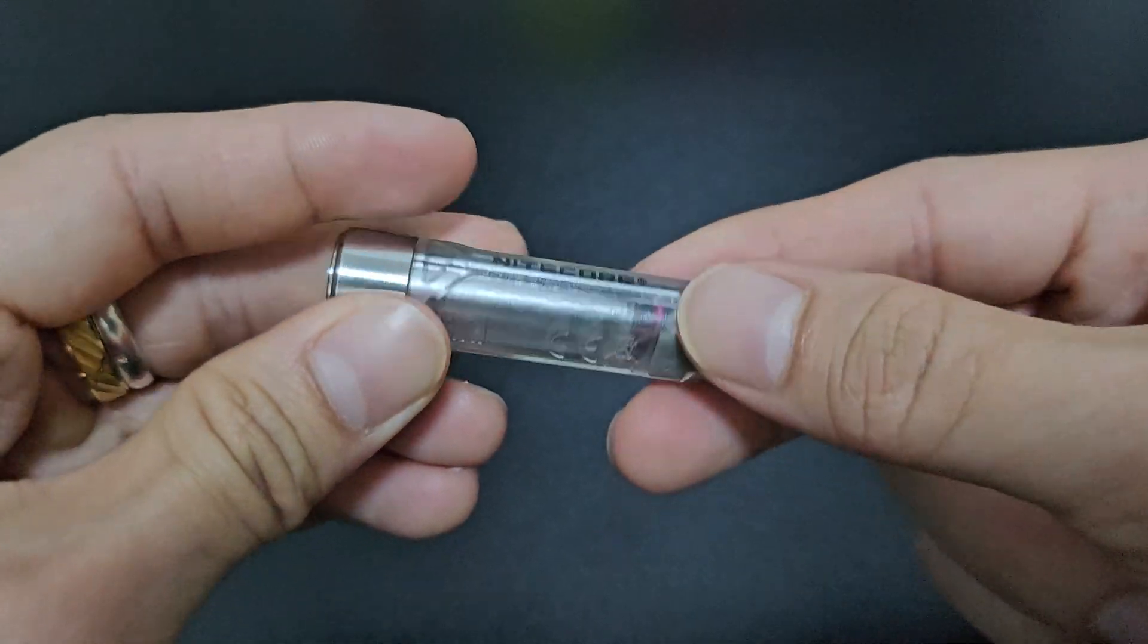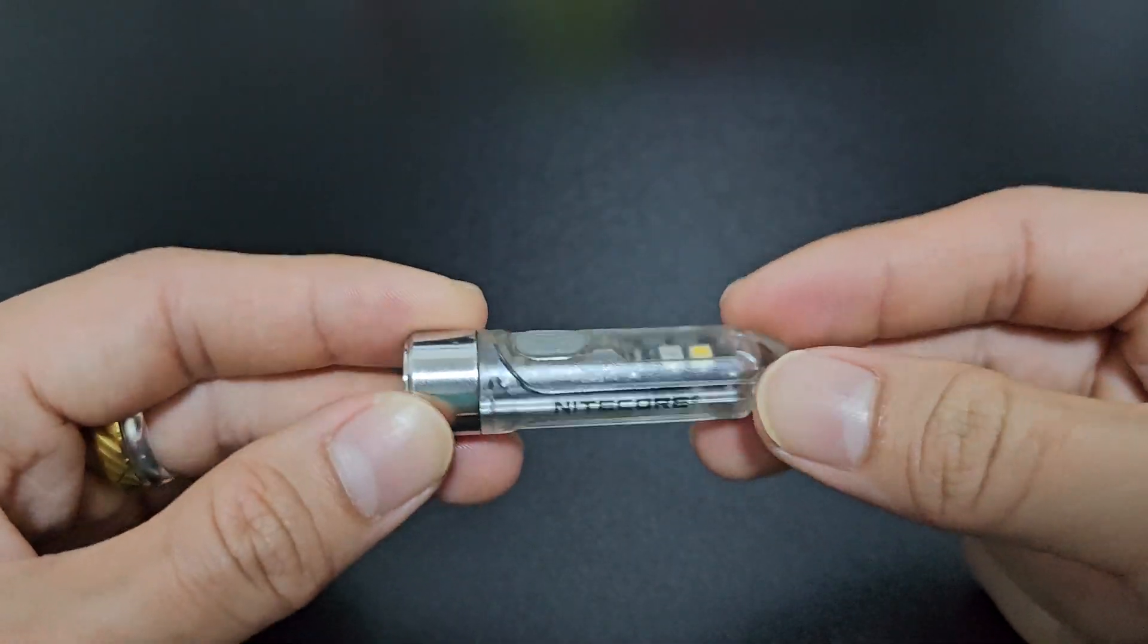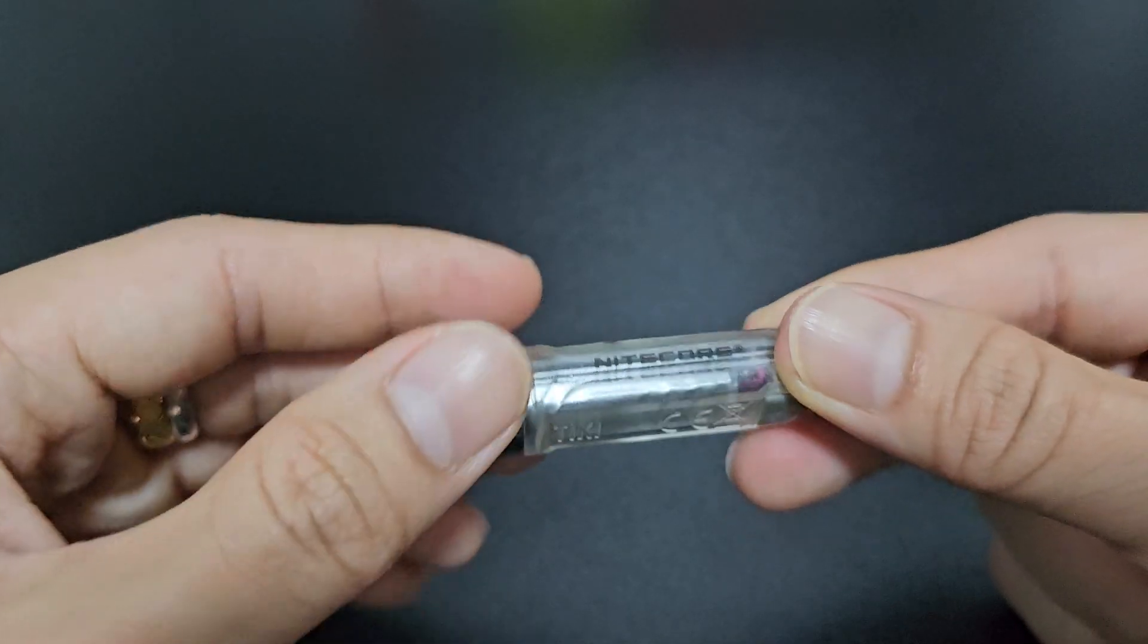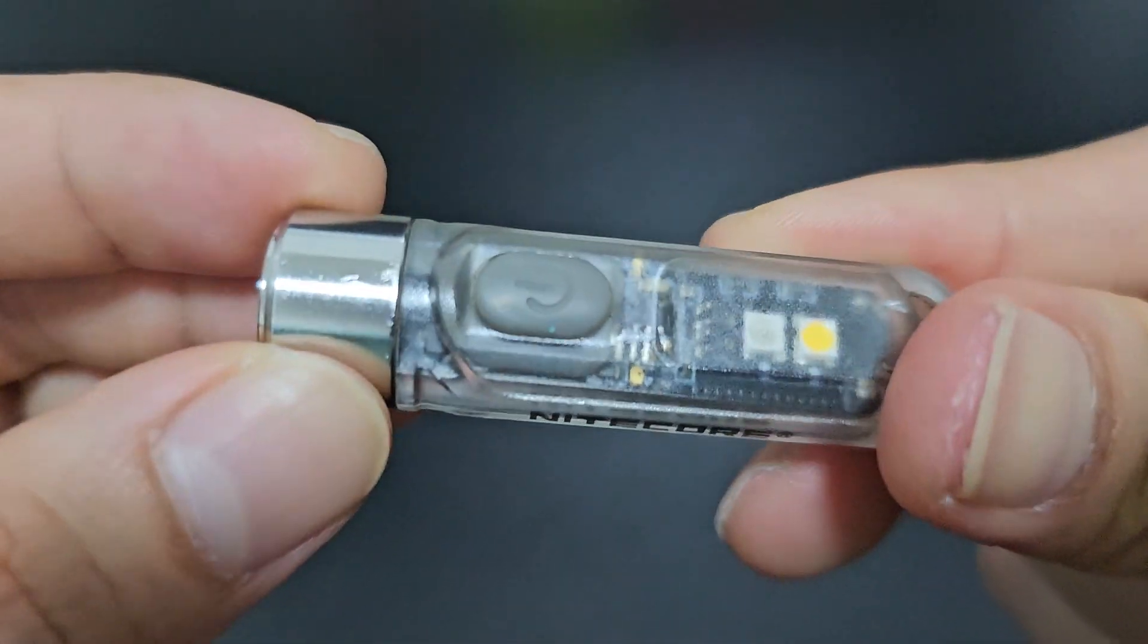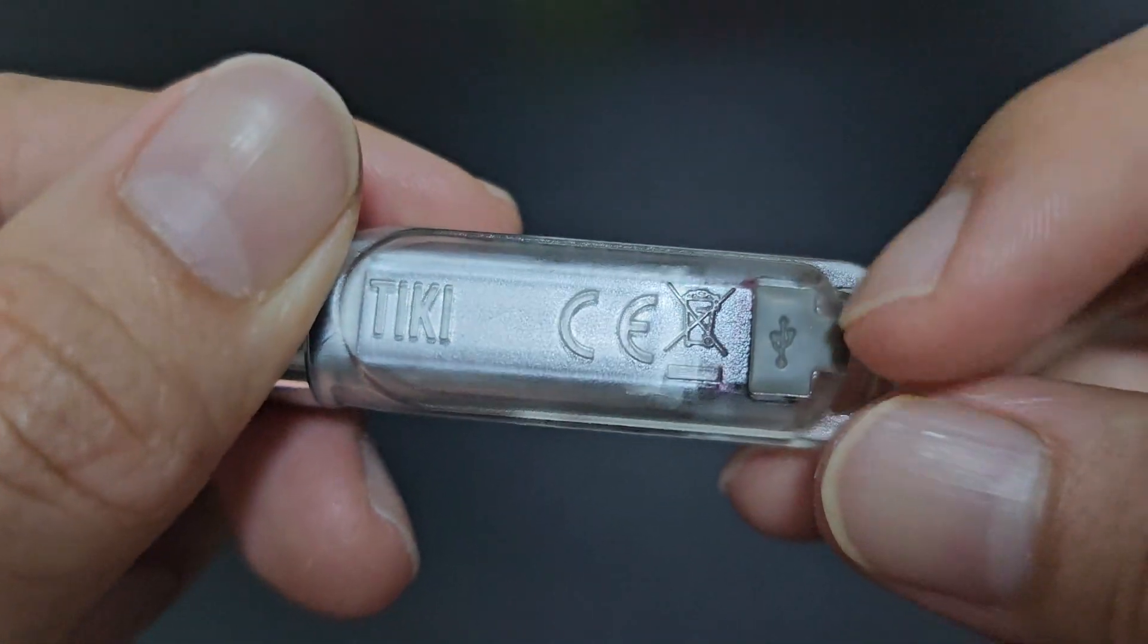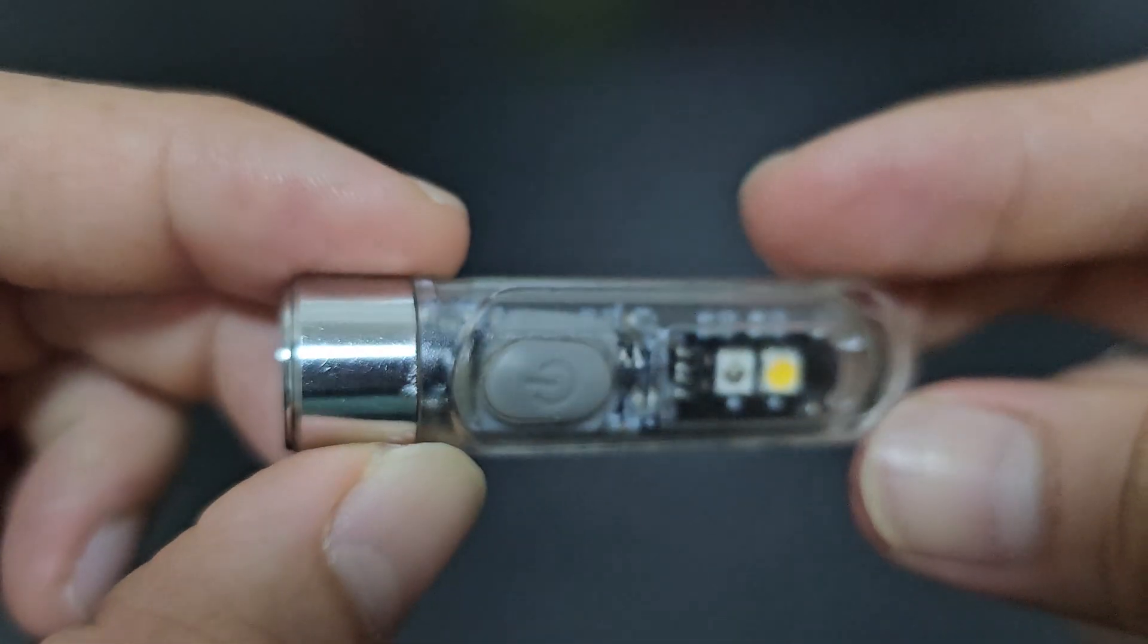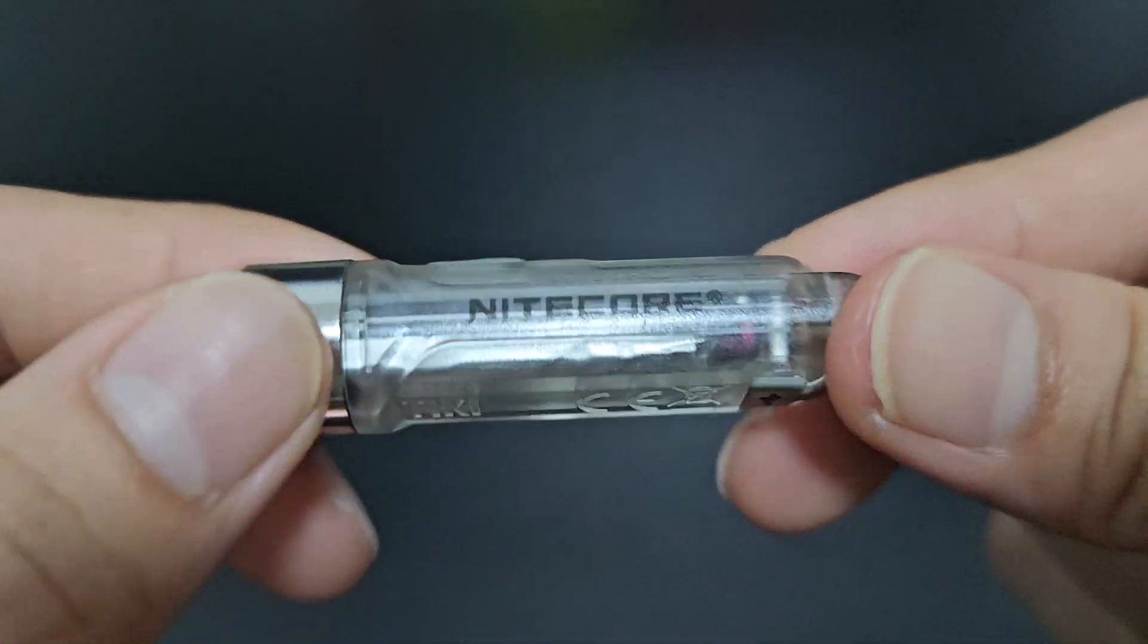So it's resistant to light splashes and rain. You can use it without any worry. You can see the button is pretty much sealed, and also the charging port is sealed by this rubber cover over here. So you don't have to worry about getting this wet, as long as you're not fully submerging this underwater.